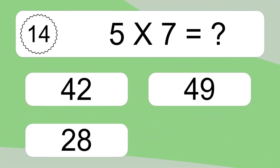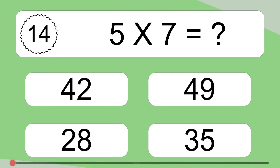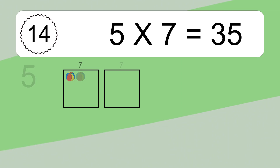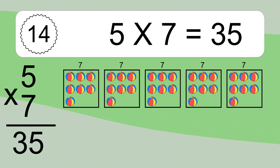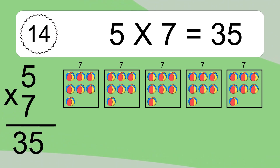Five times seven equals what? Five times seven equals thirty-five. We have five boxes, and each box has seven colorful balls inside. If you count all the balls in all the boxes together, you will have five times seven balls. This equals thirty-five balls.